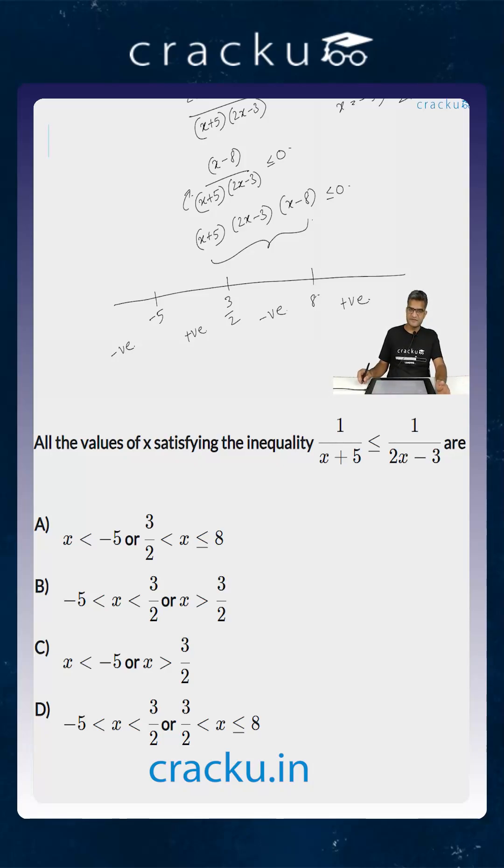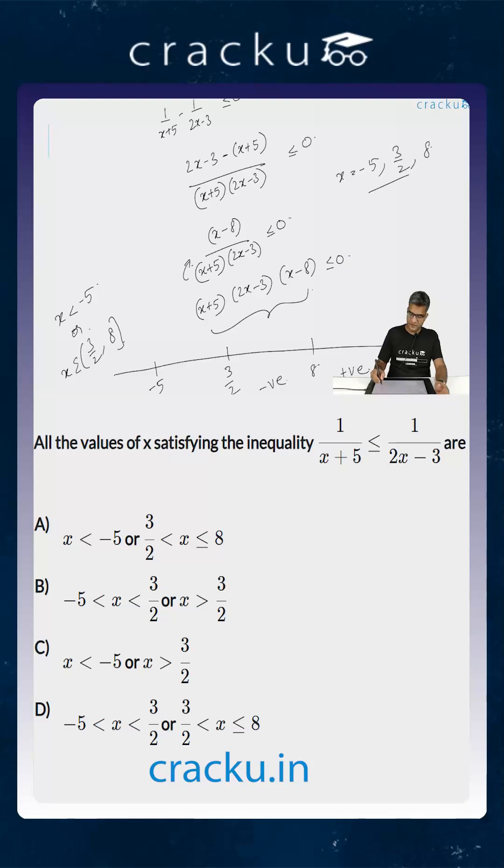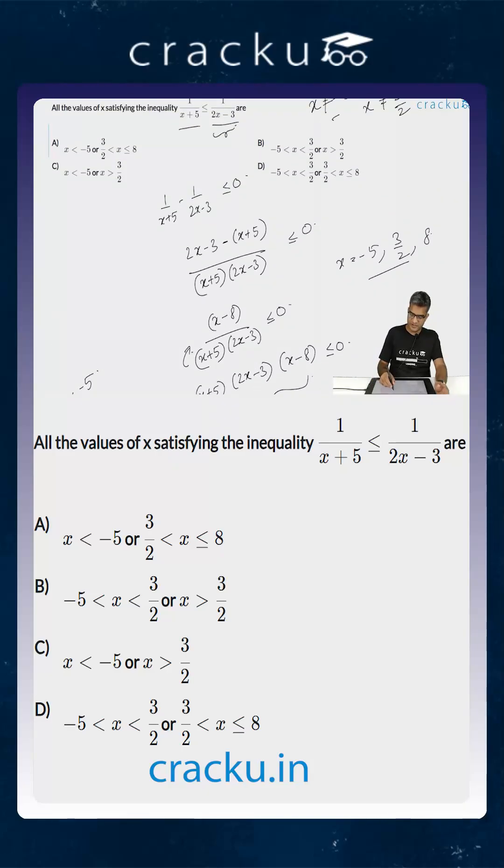So for this equation to hold, either x has to be less than -5 or x has to lie between 3/2 and 8. Remember that x cannot be equal to -5 or 3/2 because they are in the denominator. So this would imply that x has to be either less than -5 or x has to lie between 3/2 and 8.